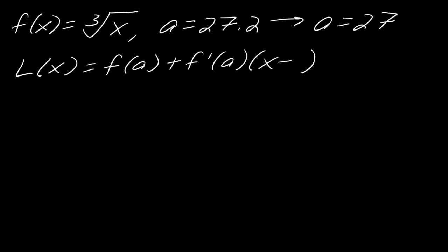Okay, so now I can go ahead and find f prime of x. That's going to be one third x to the negative two thirds. And then I can plug in some numbers. So if I take f of 27, so that's the cube root of 27. The cube root of 27 is just equal to 3.